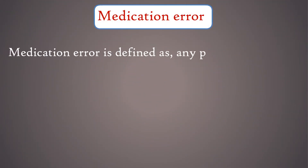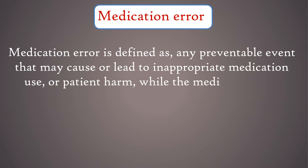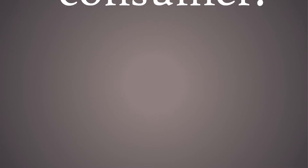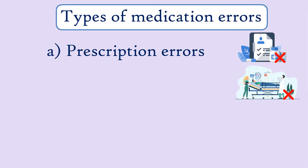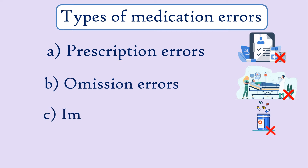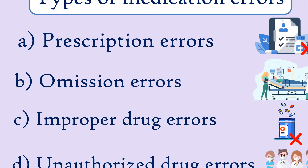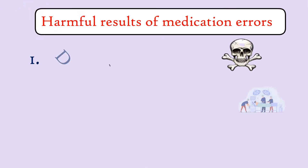Medication error is defined as any preventable event that may cause or lead to inappropriate medication use or patient harm while the medication is in the control of a healthcare professional, patient, or consumer. Some types of medication errors include prescription errors, omission errors, improper drug errors, unauthorized drug errors, and so on.